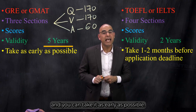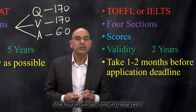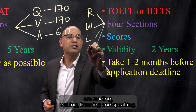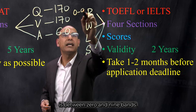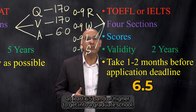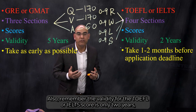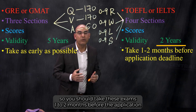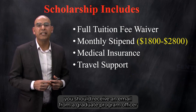Similarly, for English proficiency exams such as IELTS or TOEFL, the four main sections are reading, writing, listening, and speaking. In IELTS, each section is scored between zero and nine bands. Most of the time you require at least a 6.5 band or higher to get into a graduate school. Remember, the validity for TOEFL or IELTS scores is only two years, so you should take these exams one to two months before the application deadline.